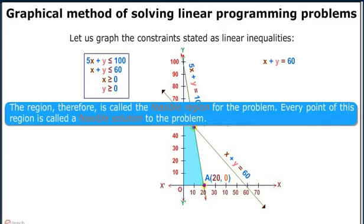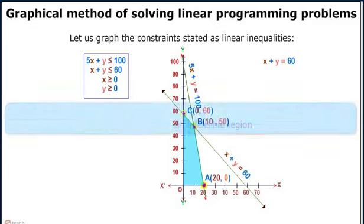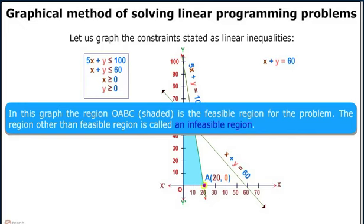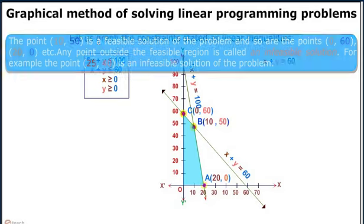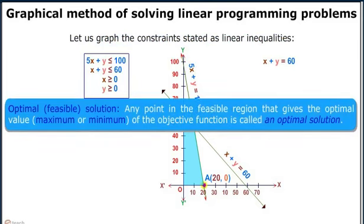Every point of the feasible region is called a feasible solution of the problem. The points (10, 50), (0, 60), and (20, 0) are feasible solutions. Any point outside the feasible region is an infeasible solution. For example, the point (25, 40) is an infeasible solution as it lies outside the shaded region. Any point in the feasible region that gives the optimal value — maximum or minimum — of the objective function is called an optimal solution.